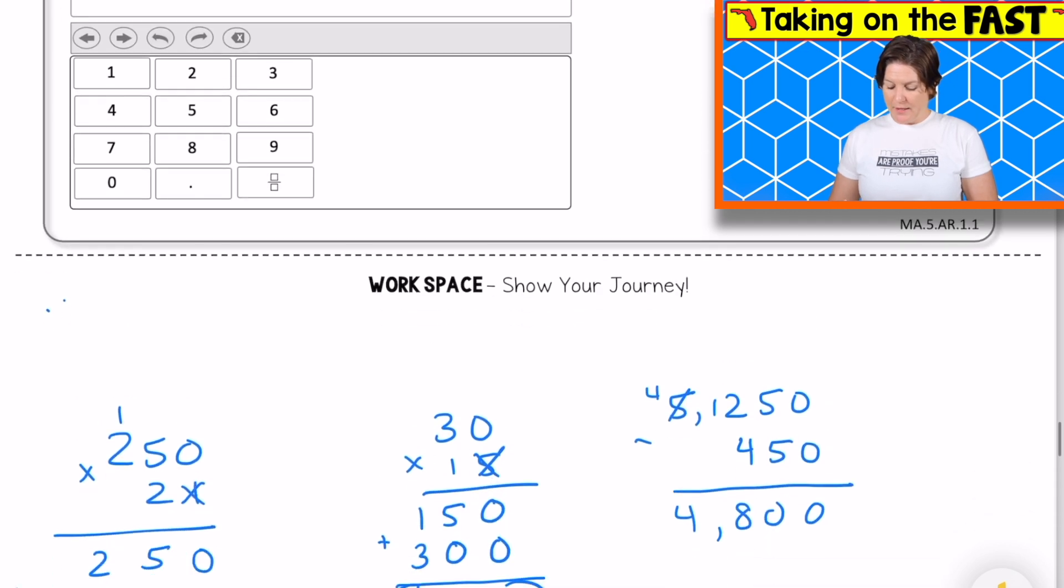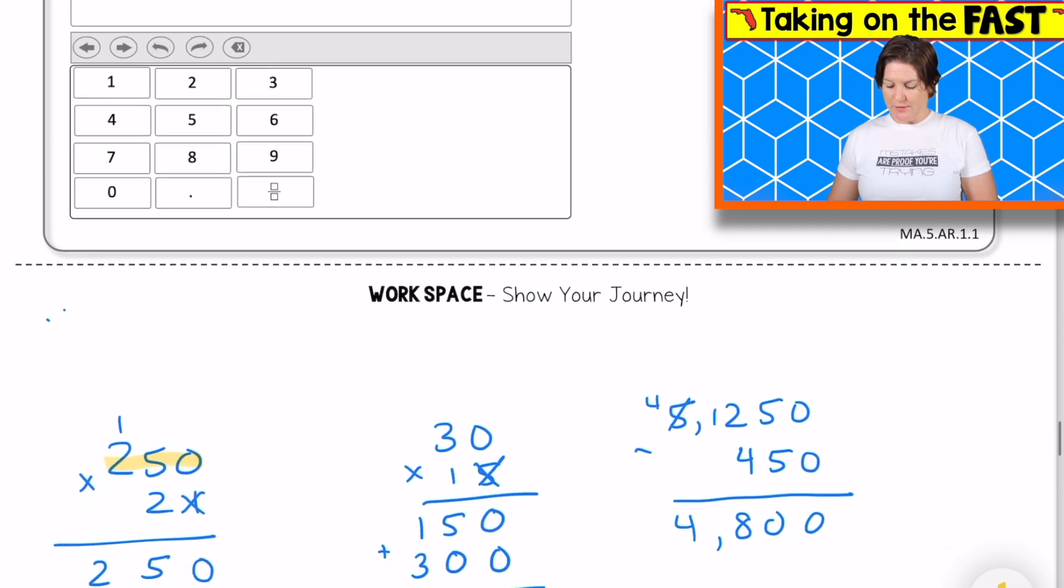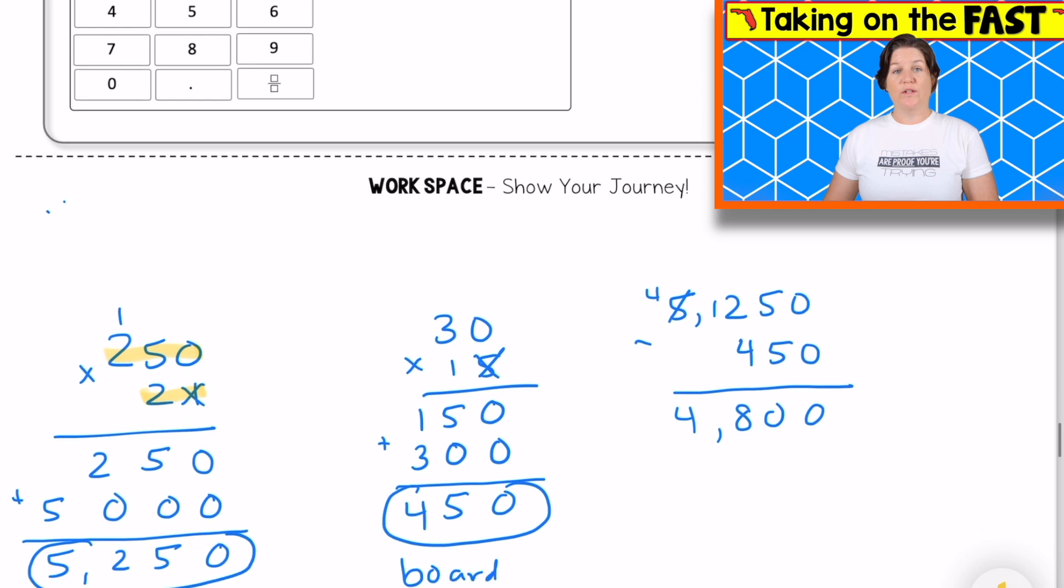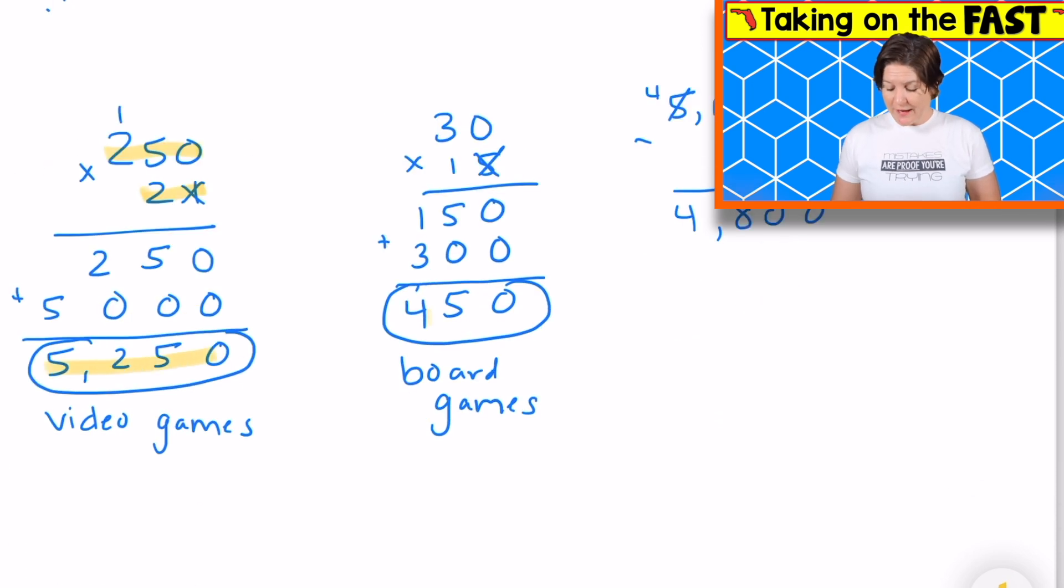So what I did first was I said, okay, we've got 250 video games that cost $21 each, which equals $5,250 that he spent on video games. Now he's got 30 board games that cost $15 each. When we multiply those out, that's $450 spent on board games.